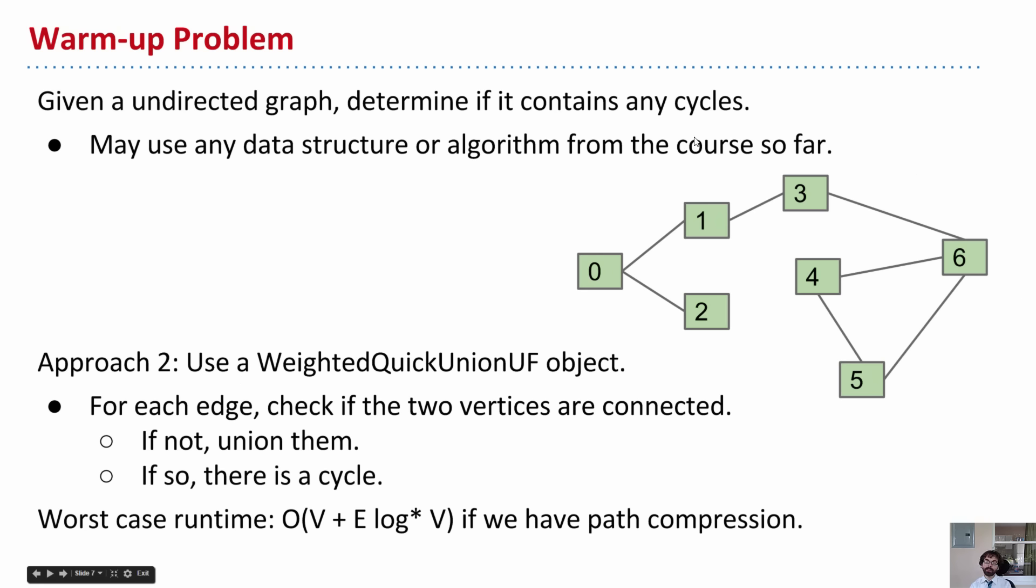And so what you'll do is you'll just iterate through every edge in the graph. And for each edge, you'll see if the two vertices that that edge connects, you'll see if they're connected already. If they're not, you'll union them. So for example, if I was running the algorithm, maybe the first edge I do is this one. And we'll say, is 4 and 6 connected? No, so union 4, 6.